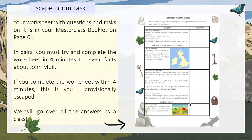Here is your escape room task. Your worksheet with questions and tasks on it is in your masterclass booklet on page six. You must try to complete the worksheet in four minutes to reveal facts about John Muir. If you complete it within four minutes, you provisionally escape. We will go over all the answers in the next slide. Go to page six of your masterclass booklet and attempt this task. Pause the video here.